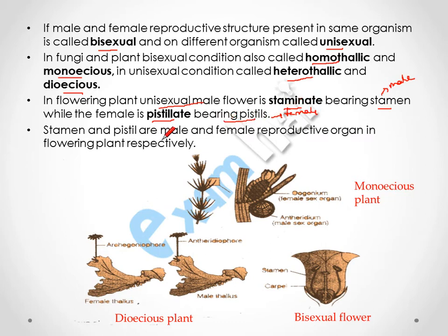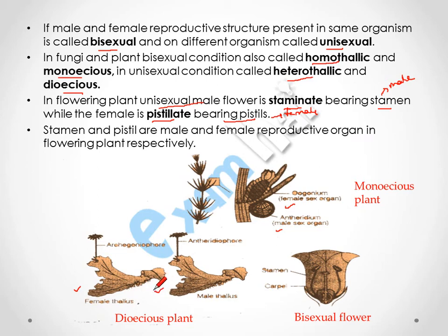In this diagram you can see the monoecious plant, which is a bisexual plant in which male and female organs are present in the same plant. In a dioecious plant, the male and female organs are present in different individual plants. In a bisexual flower, the stamen and carpel are both present in the same flower.